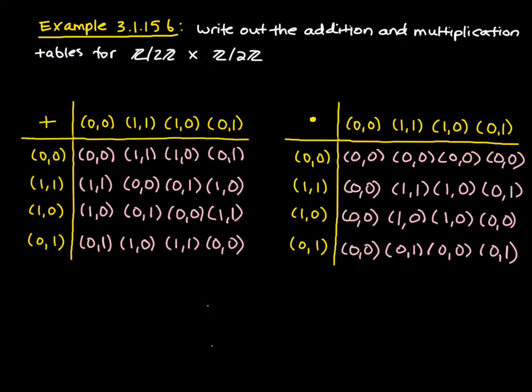You're going to be asked to do this in the homework for Z2 cross Z3 and Z mod 3Z times Z mod 3Z. So those tables will be a little bit bigger. But this is just kind of an example of what you're doing. So make sure you just list out all the elements in the respective rings, list out all the elements in the direct product of those rings, and then do the multiplication and addition to get those tables.